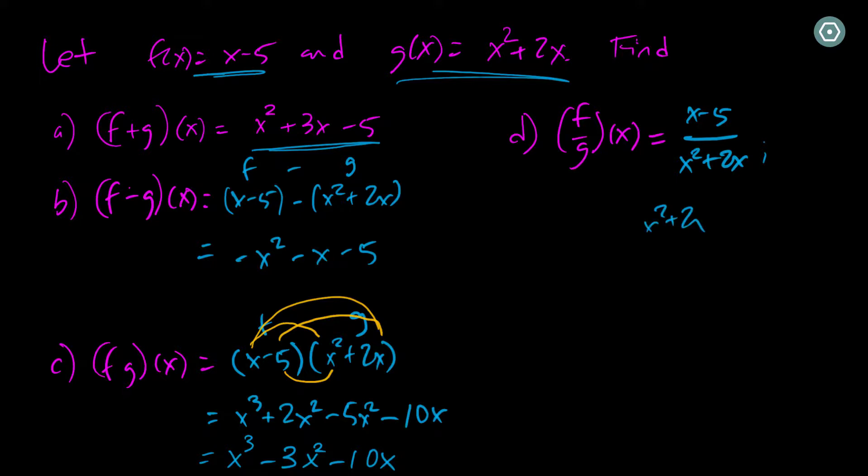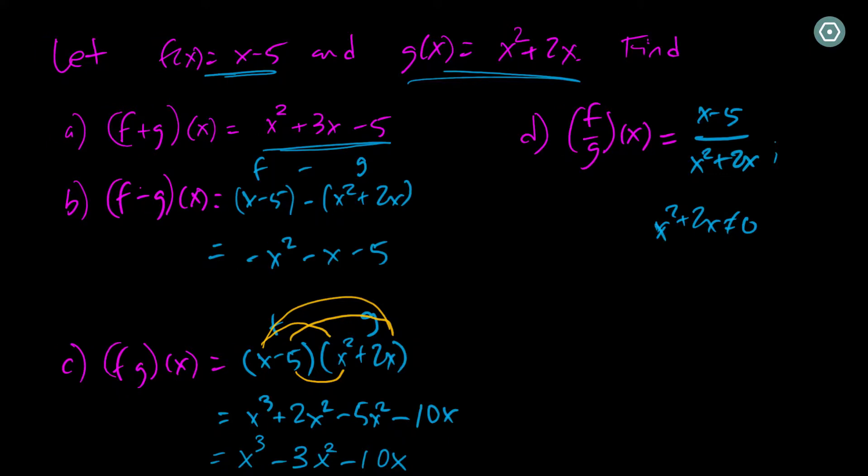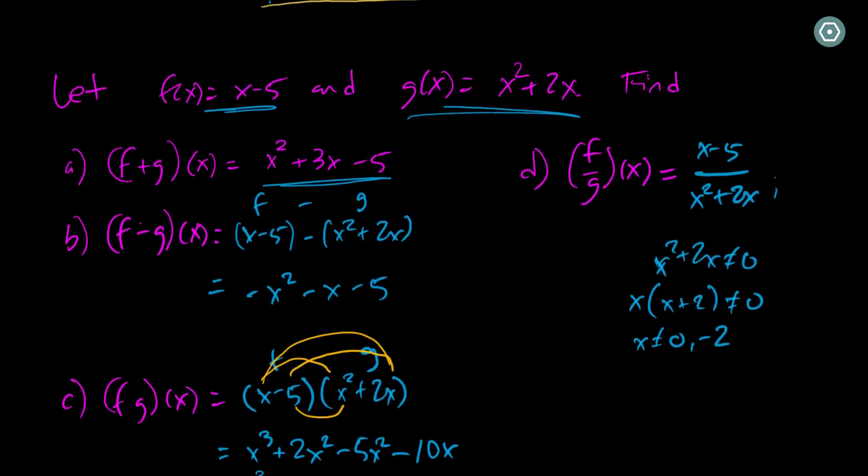So x squared plus 2x can't be 0. Now to solve that equation, this is quadratic. So I could factor out an x times x plus 2 not equal to 0. So that means x can't be 0 and x can't be negative 2.